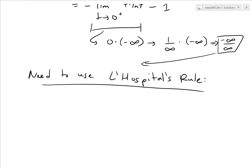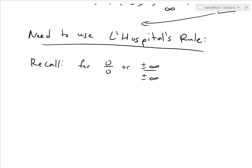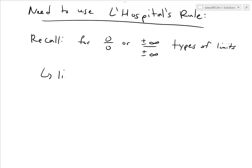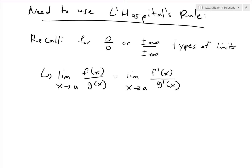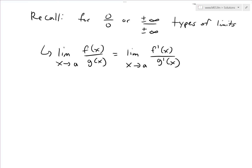Basically, L'Hôpital's rule tries to determine which infinity grows faster. To recap: if you have a limit of the form 0/0 or ±infinity/±infinity, you can solve it by taking the derivatives of the numerator and denominator separately. So the limit as x approaches a of f(x)/g(x) equals the limit as x approaches a of f′(x)/g′(x). Since our case is an infinity over infinity type, we apply this rule.